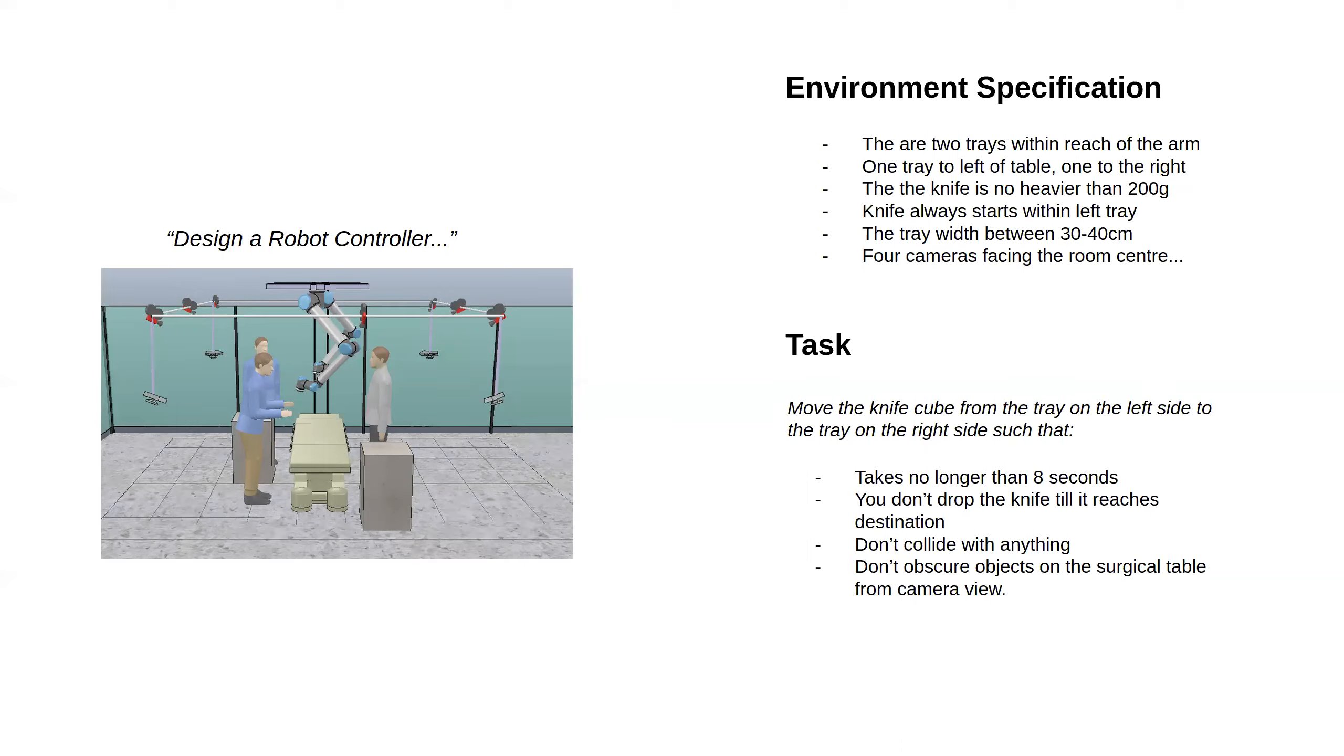Say you're a designer, maybe doing some ML algorithm or classical control. I've designed this robot controller, let's say a pick and place controller picking up stuff from one tray and putting it into the other. What's the specification for that task? What am I trying to accomplish? There's two parts to that.